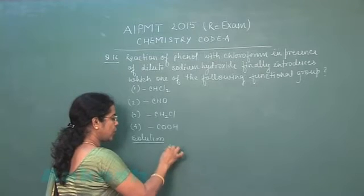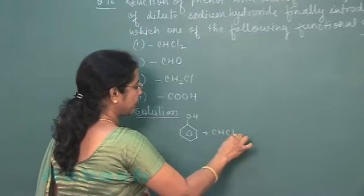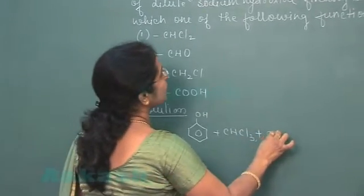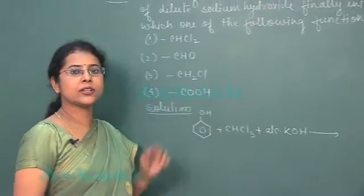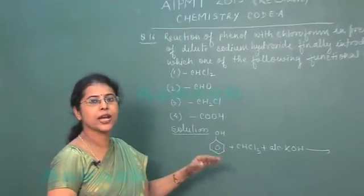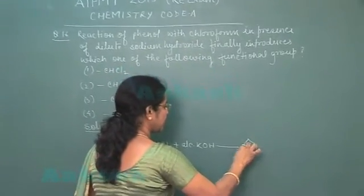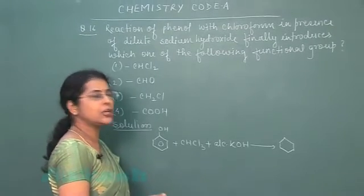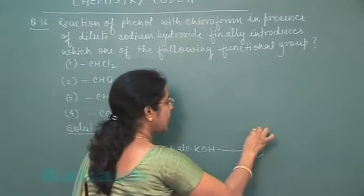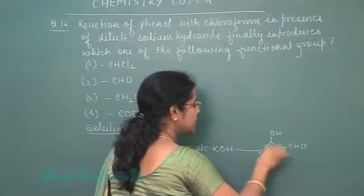This is the reaction of phenol with chloroform and alcoholic KOH. We are familiar with this reaction - this is known as Reimer-Tiemann reaction. In this reaction the reaction product is salicylaldehyde, which means OH and at this position CHO group.